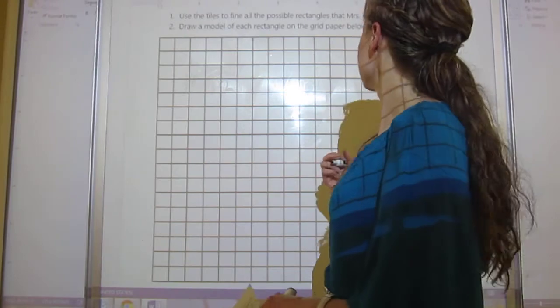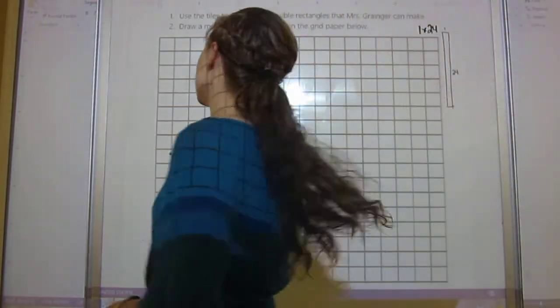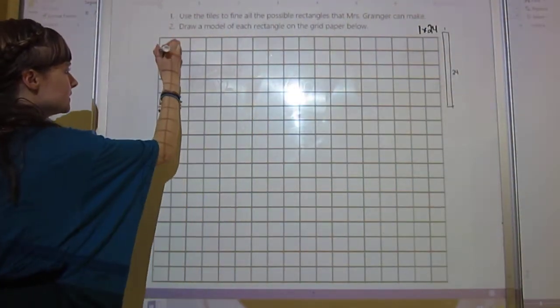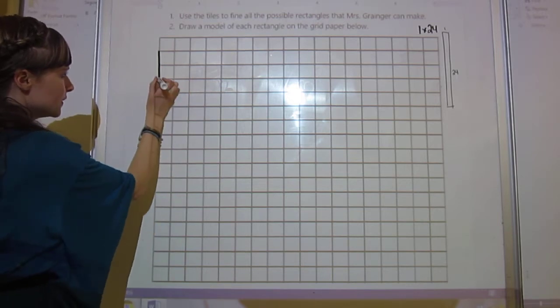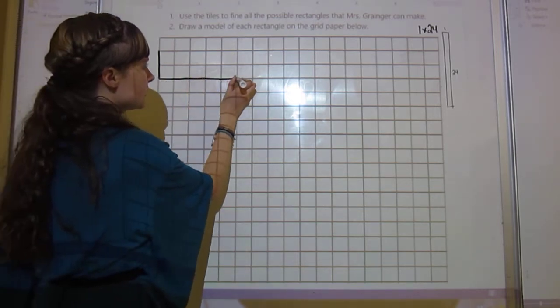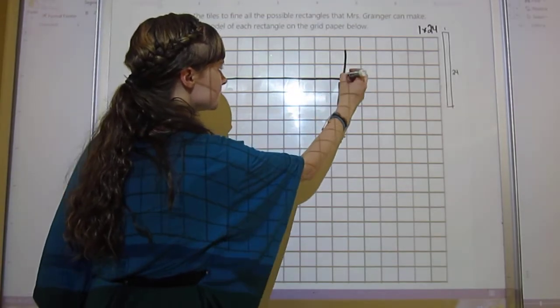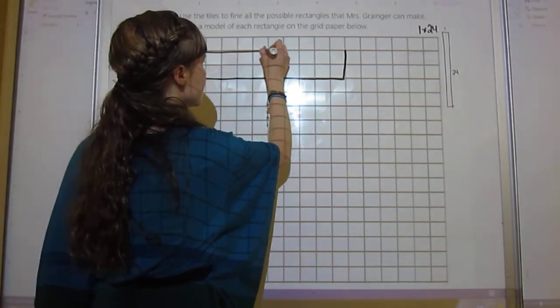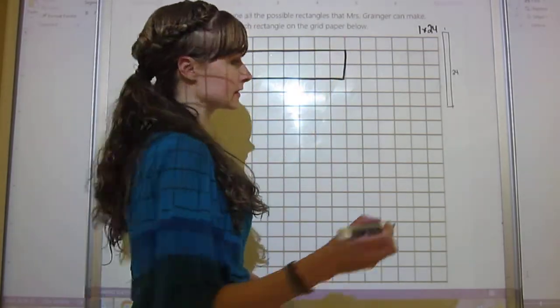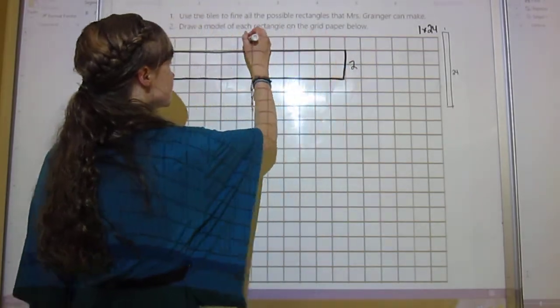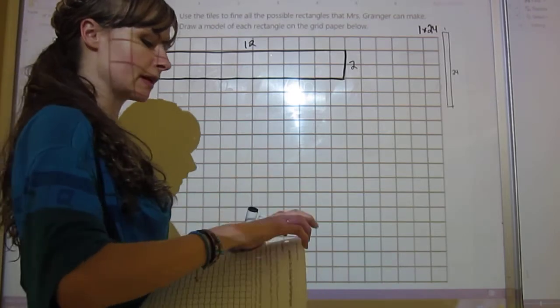Another one you can do is 2 by 12. So here's 2, and then we count across: 1, 2, 3, 4, 5, 6, 7, 8, 9, 10, 11, 12. It's always good to label your rectangles, so this is 2 and this is 12.